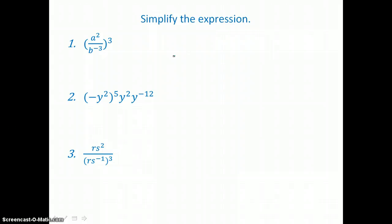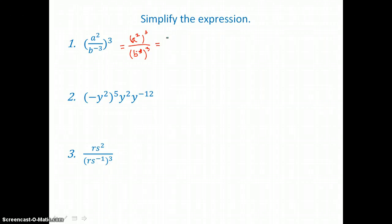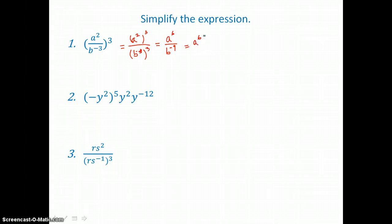Here we have 3 problems to simplify. In the first one, we have a quotient raised to a power. I start by raising every factor in this quotient top and bottom to that power outside. So I have a squared raised to the 3rd power in the top and b to the negative 3rd power raised to the 3rd power in the bottom. Double powers I multiply: a to the 2 times 3 is a to the 6th power, and b to the negative 3 times 3 is b to the negative 9th power. Since I don't leave a negative exponent in my answer, I move b to the numerator and make the exponent positive. So I end up with a to the 6th times b to the 9th.